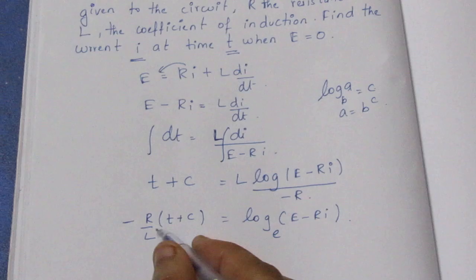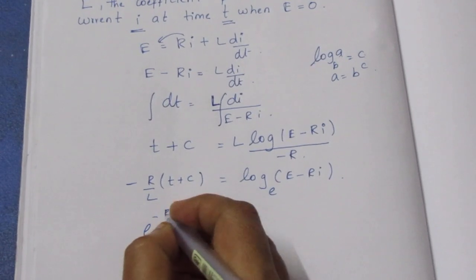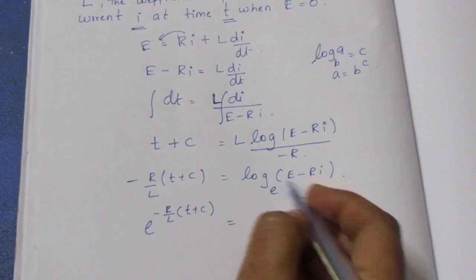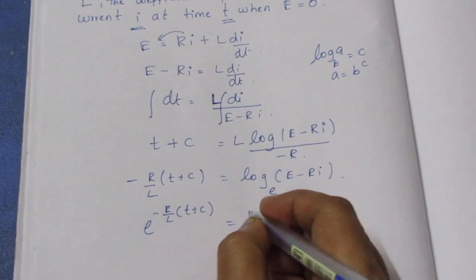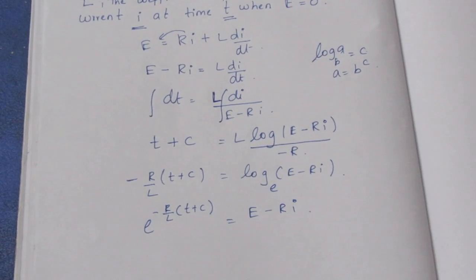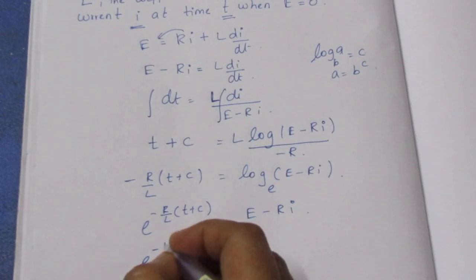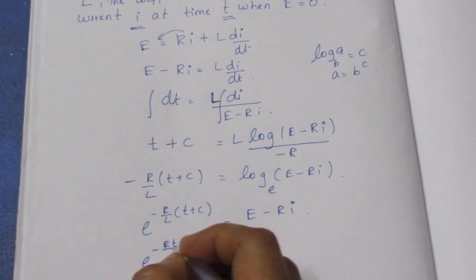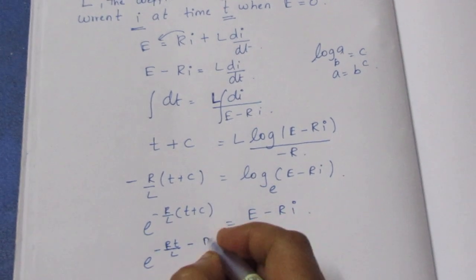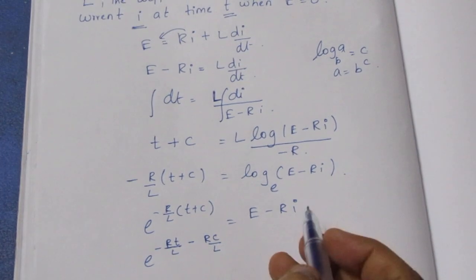So that means E minus Ri is equal to e to the power c. So this becomes e to the power of minus R by L into t plus c, which is equal to E minus Ri. Expanding this gives e to the power minus Rt by L, then minus Rc by L.